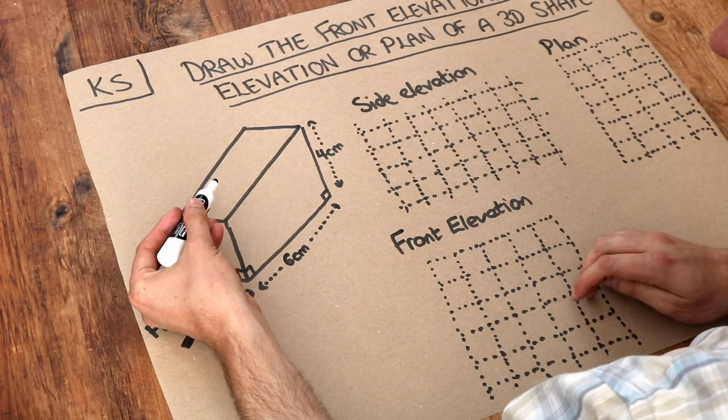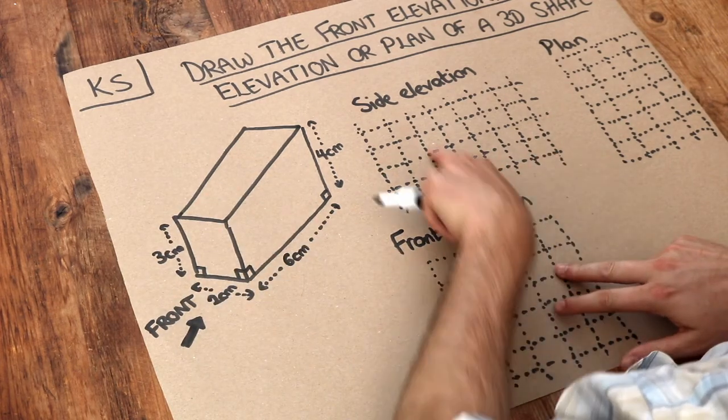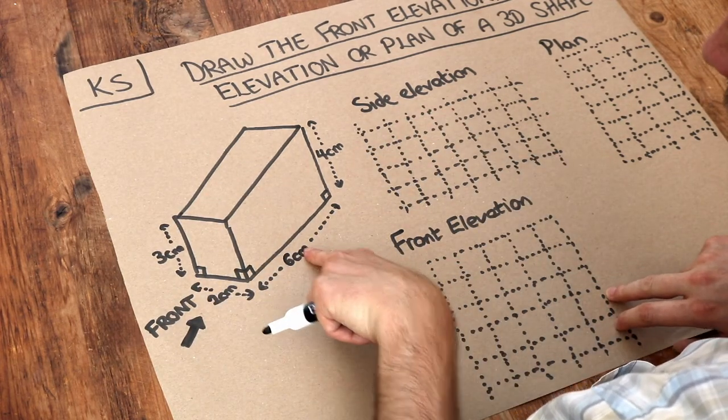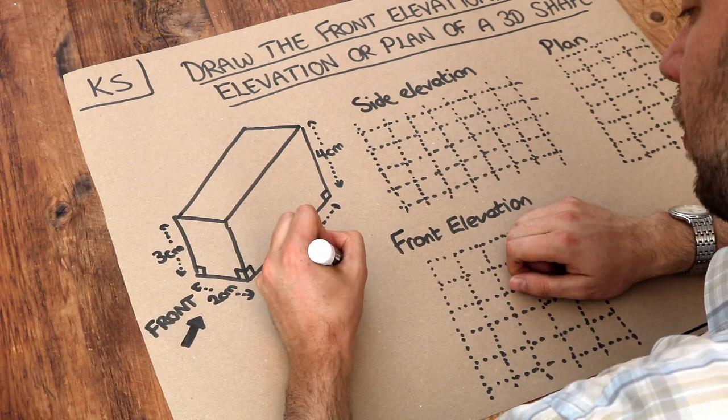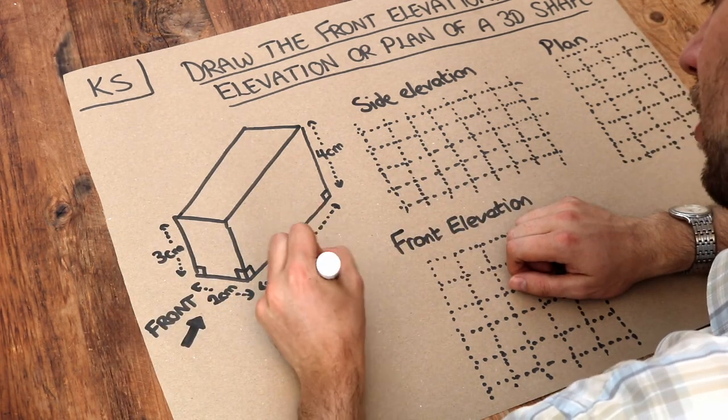So that views the front elevation, the side elevation would just be the view from the side of it. So if that's the front well that would be the side wouldn't it? So this view here would be the side elevation.